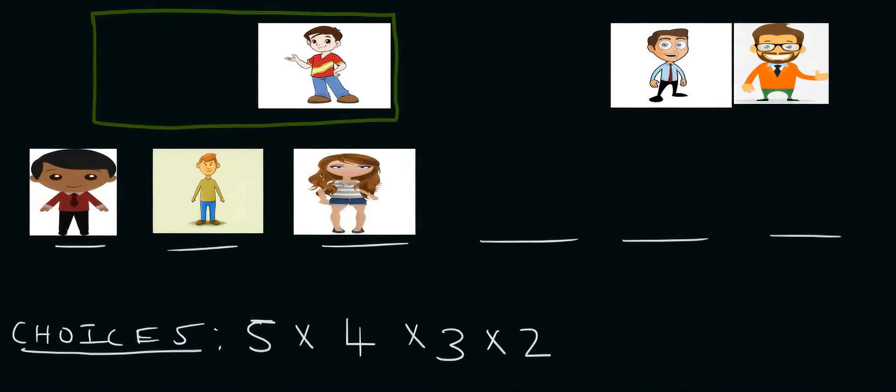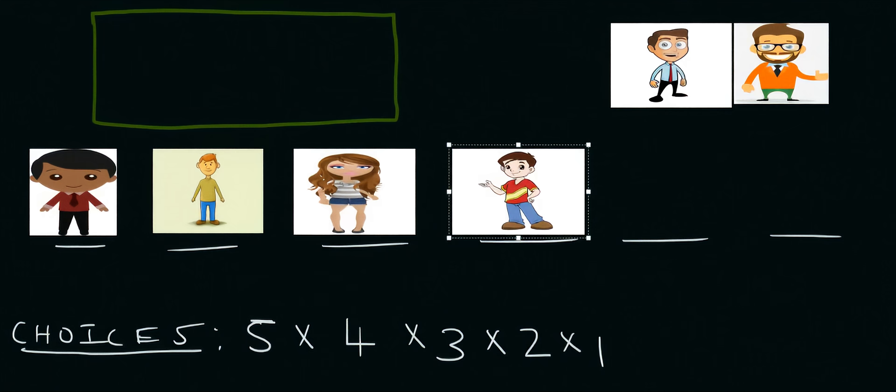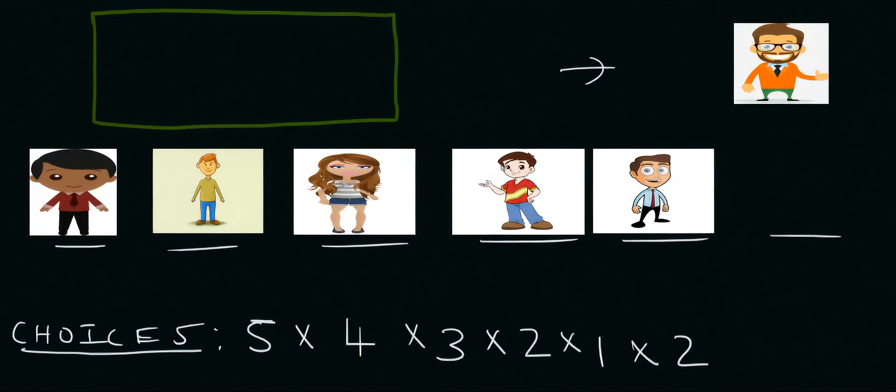Then how many choices do you have? Well, it's just the boy that you're looking at, and so you can just say that there's only one choice. Then for these last two people, you've got two options available so we can say times two again. And then for the last person, there's obviously only one choice now.